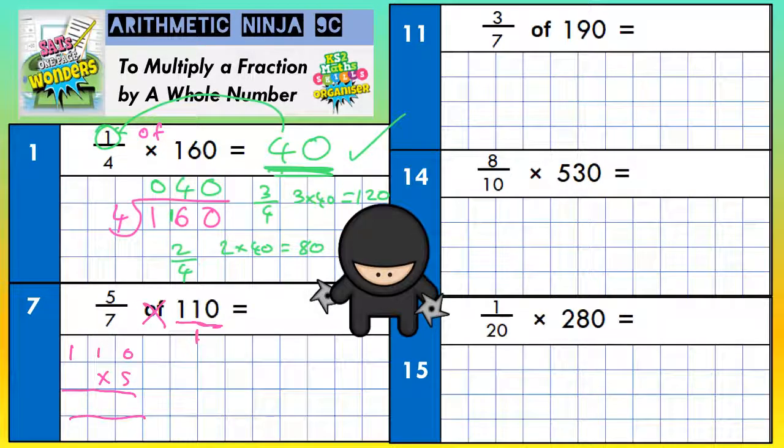5 nothings are nothing, 5 ones are 5, 5 ones are 5. So that's going to give us 550 on the top, and then 7 times 1 on the bottom, 7 times 1 is 7. So we've got an improper fraction, 550 divided by 7.